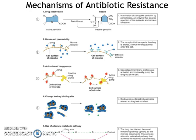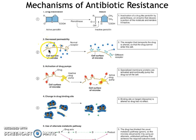A second way that microbes can resist antibiotics is decreased cell permeability. In order for the antibiotic to function and kill the human pathogen, it needs to get into that cell — the drug needs to enter the cell in order to kill it. The way these drugs enter cells is through protein transporters; they can't just pass through the membrane, they have to go through channels or holes in the membrane.